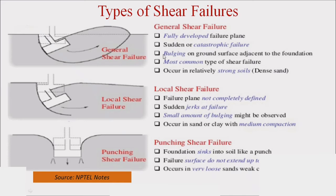In the figure for general shear failure, the curvilinear upward line is the bulging line, and the line from footing to ground level is the failure or slippage line. This occurs in all types of soil. If the friction angle phi is greater than 36 degrees, this type of failure occurs. The failure plane is fully well-defined and bulging occurs between the footing and ground surface.